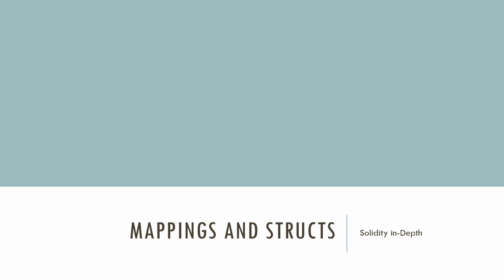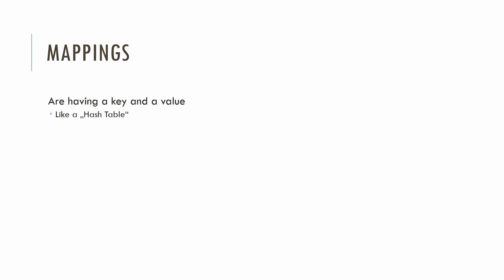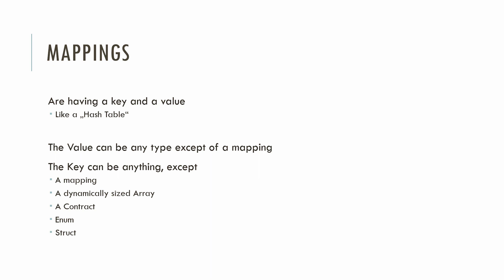In this video we are having a look at mappings and structs in Solidity. Let's start with mappings. Mappings have a key and a value — it looks a little bit like a hash table. The value can be any type except a mapping. The key can be anything except a mapping, a dynamically sized array, a contract, an enum, or another struct. This is from the Solidity docs.